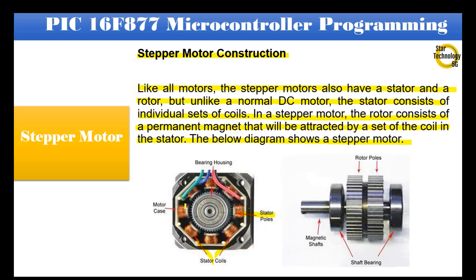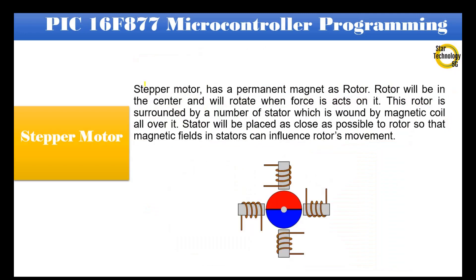The diagram shows stator poles, motor case, bearing housing, and the rotor. The rotor consists of a permanent magnet and has rotor poles. The rotor is in the center and will rotate when force acts on it. It is surrounded by a number of stators wound by magnetic coils. Stators are placed as close as possible to the rotor so that the magnetic fields in the stators can influence the rotor's movement.